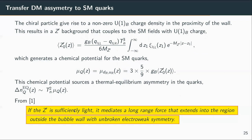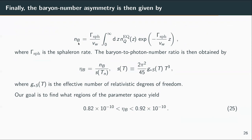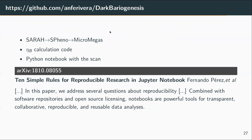Conceptually, the idea is that the Z-prime is sufficiently light so that it can mediate long-range forces that extend outside the bubble wall, connecting the broken and unbroken electroweak phases. With this we can calculate the baryon number from the real asymmetry. This asymmetry eta_B needs to be in a very specific range to explain the observations. We already implemented everything in well-known high-energy physics tools — the abelian model is implemented in SARAH. With this we can generate a Fortran code called SPheno, and with the output of SPheno we can calculate the properties of the dark sector through micrOMEGAs.